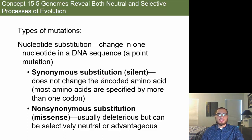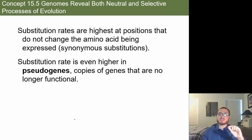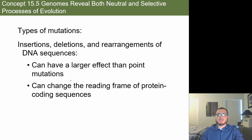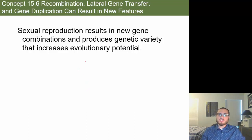There are different types of mutations: synonymous mutations, also called silent mutations, which do not change the encoded amino acid; and non-synonymous mutations, which switch nucleotides around and do change the amino acid. Substitution rates are highest at positions that do not change the amino acid — synonymous substitutions. Substitution rates are even higher in pseudogenes, which are copies of genes that are no longer functional.